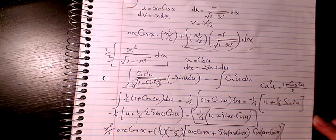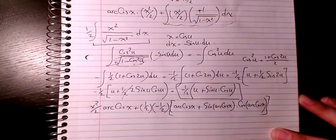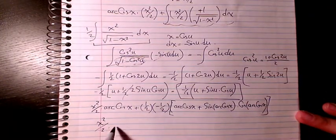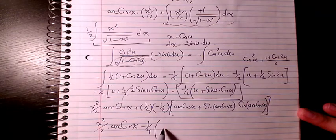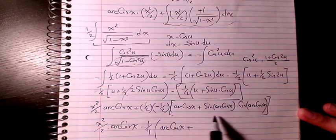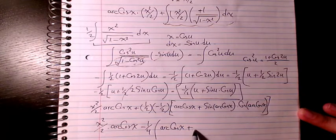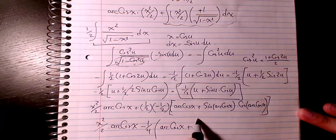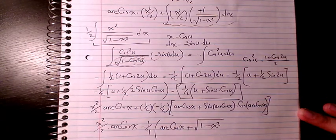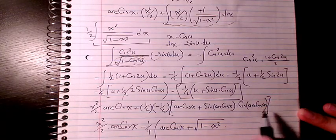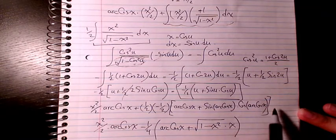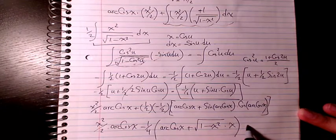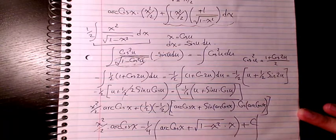Combining everything, the final answer is: x squared over 2 times arccos(x) minus 1 over 4 times arccos(x), plus 1 over 4 times square root of (1 minus x squared) times x, plus C. Note that sin(arccos(x)) is always equal to square root of (1 minus x squared), and cos(arccos(x)) is always equal to x. Don't forget to write plus C — that's the answer.